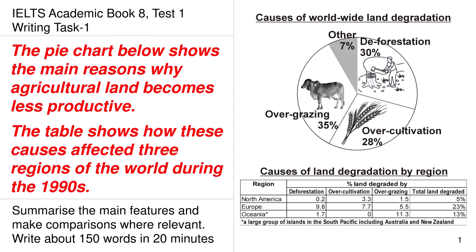Today, we'll be discussing the IELTS Academic Book 8, Test 1, Writing Task 1. The topic is: the pie chart below shows the main reasons why agricultural land becomes less productive. The table shows how these causes affect three regions of the world during the 1900s.